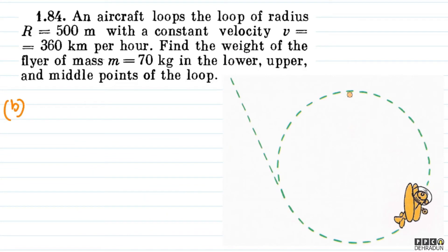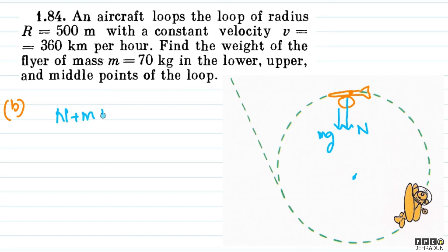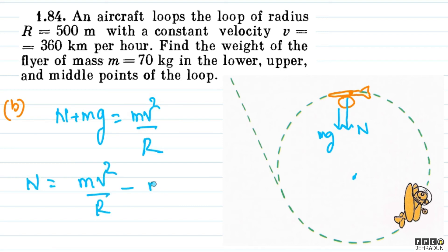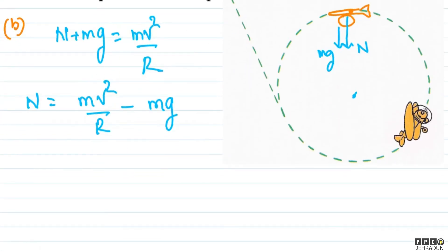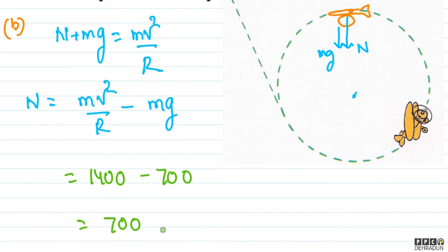Now in part b, when the flyer is at the upper point of the loop, the normal reaction and gravity both point toward the center. So the equation becomes: mg plus N equals mv squared by r. Therefore N equals mv squared by r minus mg, which gives 1400 minus 700 equal to 700 Newton.